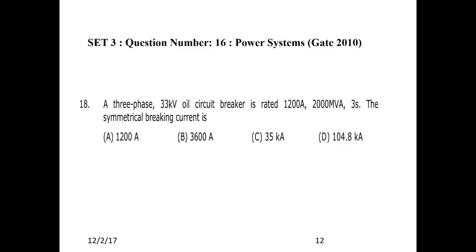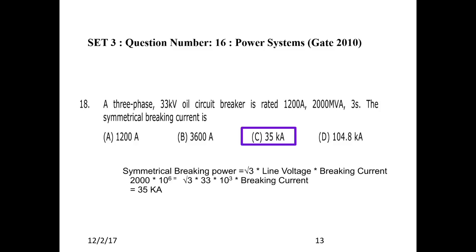Next question: A three-phase 33 kV oil circuit breaker is rated 1200 amps, 2000 MVA, 3 seconds. The symmetrical breaking current is calculated using the formula: symmetrical breaking power = √3 × line voltage × breaking current. By substituting, the breaking current is 35 kilo amps.